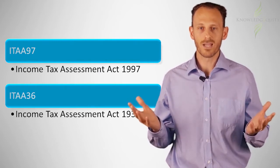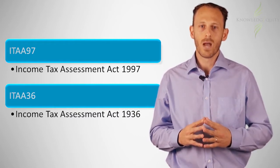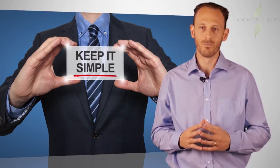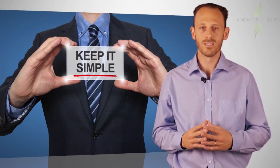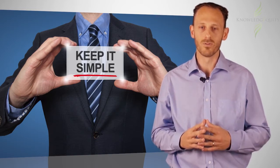Why are there two Acts? Originally there was only the ITAA 36, however it was decided that the legislation should be rewritten in simpler form. The project to simplify the legislation is called TLIP, the Tax Law Improvement Project.